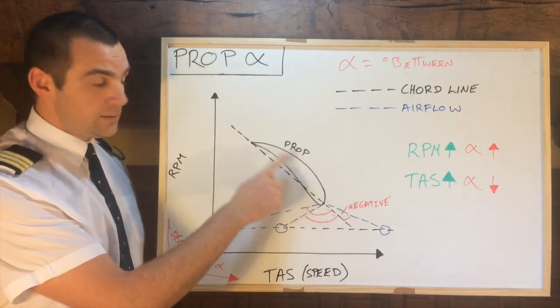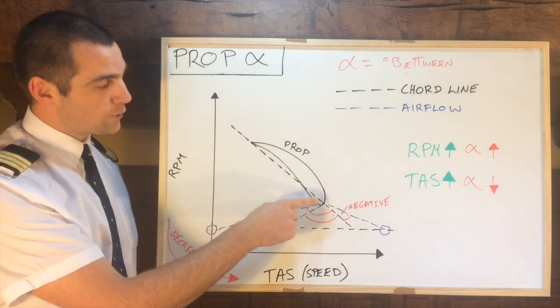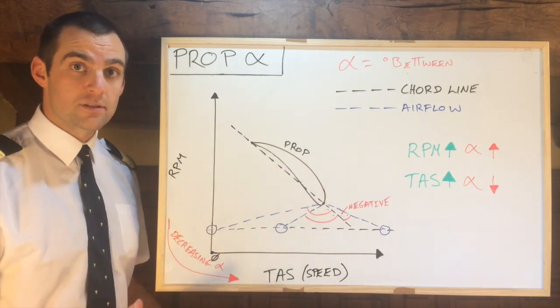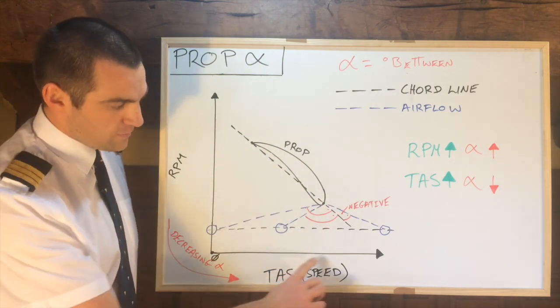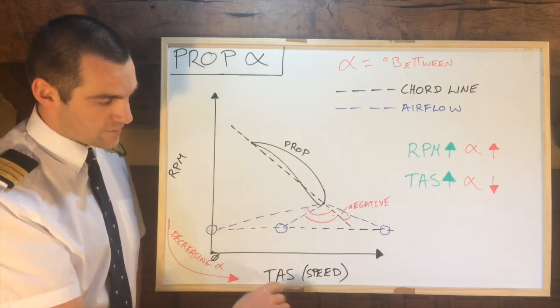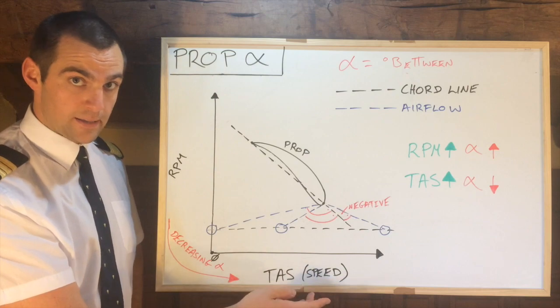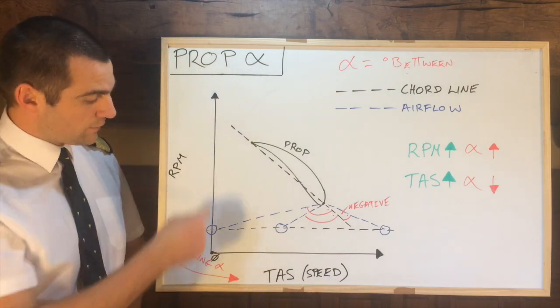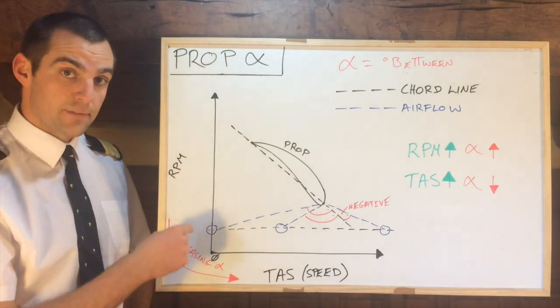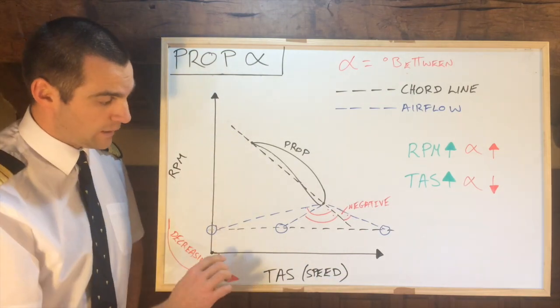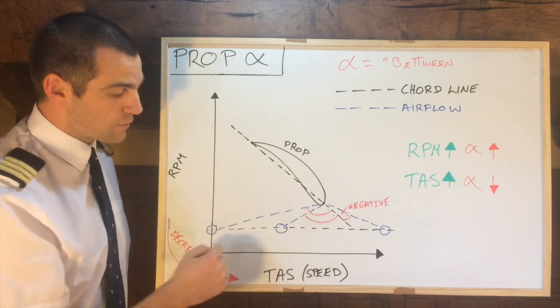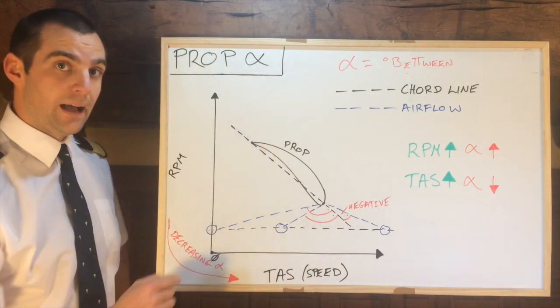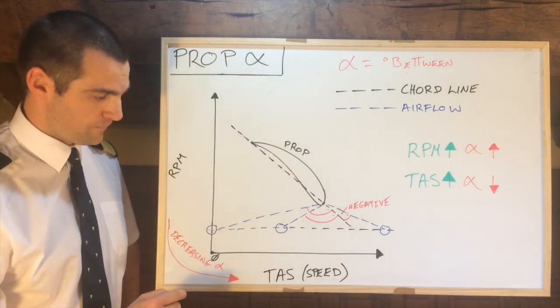I've drawn a propeller. A propeller is essentially just an aerofoil. On the bottom axis I have TAS, i.e. speed, and on the vertical axis I have RPM, and they are both increasing outwards like this.